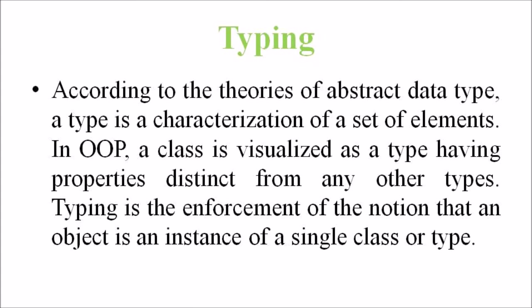The two types of typing are strong typing and weak typing. In strong typing, the operation on an object is checked at the time of compilation, as in the programming language Eiffel. In weak typing, a message may be sent to any class and the operation is checked only at the time of execution, as in the programming language Smalltalk.